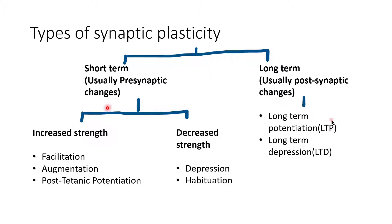Depending on whether synaptic strength is increased or decreased, short-term changes in synaptic plasticity may be classified as facilitation, augmentation, and post-tetanic potentiation, where synaptic strength is increased. On the other hand, in the case of depression and habituation, synaptic strength is decreased. All these are examples of short-term changes in synaptic plasticity where the changes usually occur at the pre-synaptic terminal.